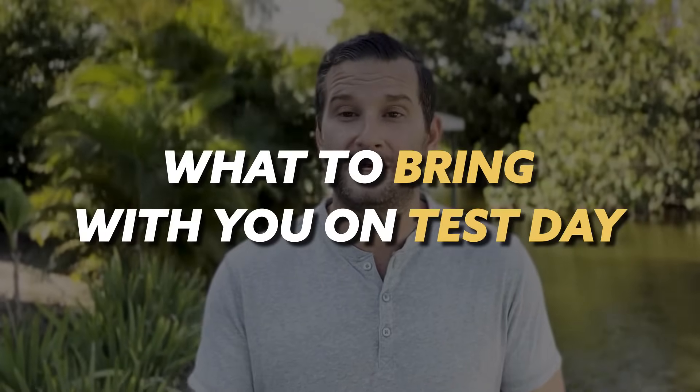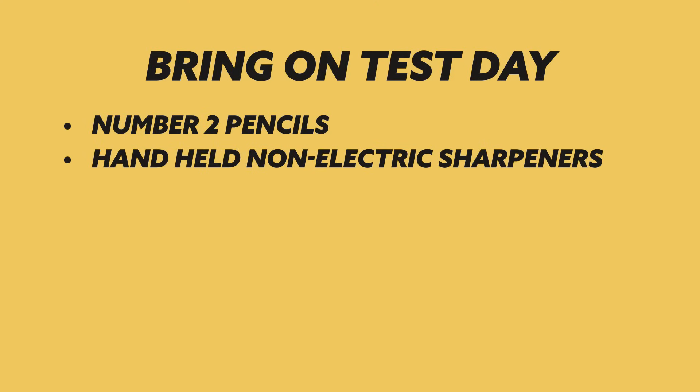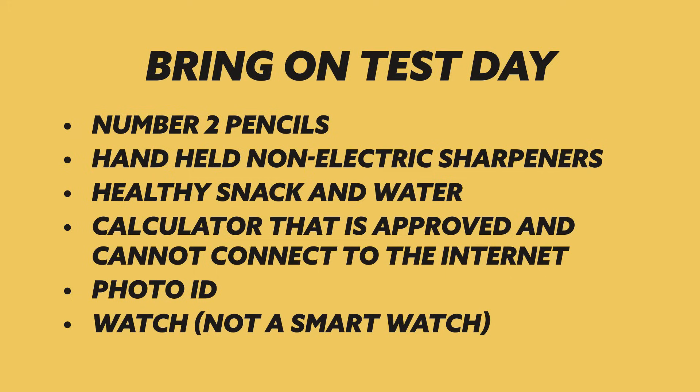There are a few things you should bring on test day. First, bring number two pencils — you'll have a scantron sheet, so bring two or three in case you break the tip. Also bring a handheld pencil sharpener, since nothing electric is allowed. It's helpful to bring a snack — it's a long test, over two hours, and you don't want to be distracted by hunger. Bring something healthy like a protein bar or granola bar.